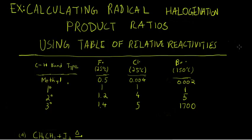In this video, as the title indicates, we are going to be calculating radical halogenation product ratios using a table of relative reactivities.